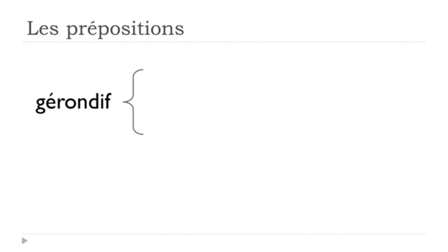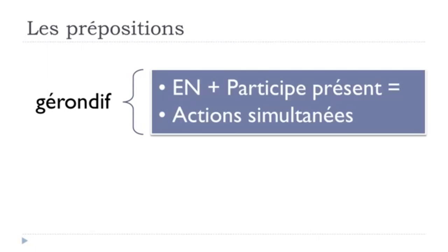The last use I want to introduce is what we call the gérondif. It's a bit tricky because we haven't yet seen the participe présent — that will come soon. But I wanted to introduce it now. The meaning of the gérondif is when you want to express two simultaneous actions — actions simultanées — two actions taking place at the same time. We construct it with la préposition 'en' followed by the participe présent form.